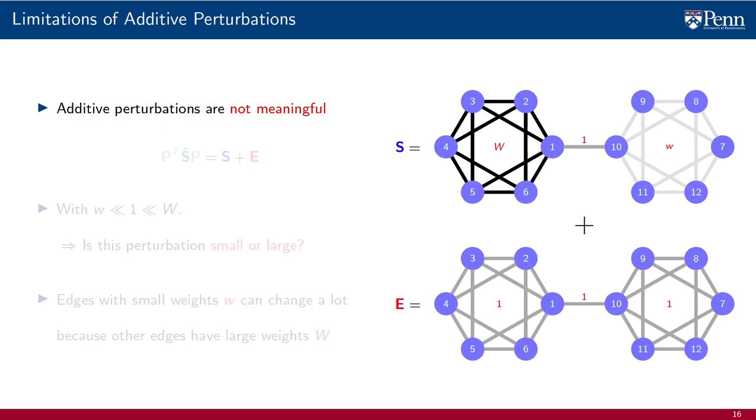To this graph we add the perturbation matrix E we show below. All of the non-zero weights of the perturbation are set to 1. The resulting operator hat S, which by the way is defined modulo permutation, there may be a relabeling going on, is the sum of these two graphs.